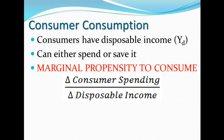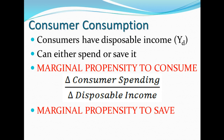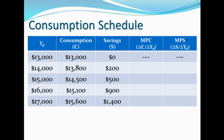There is also something called the marginal propensity to save. That is the same idea — it's the change in consumer saving over the change in disposable income. And we will take a look at this real quickly.